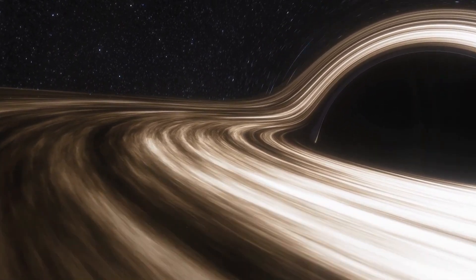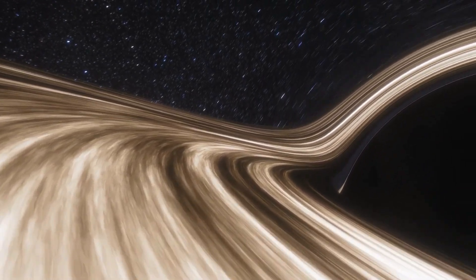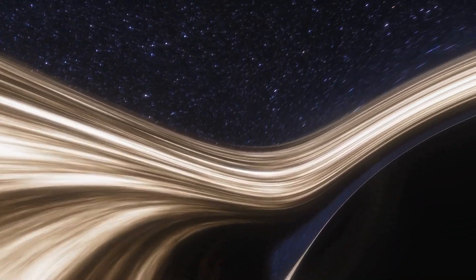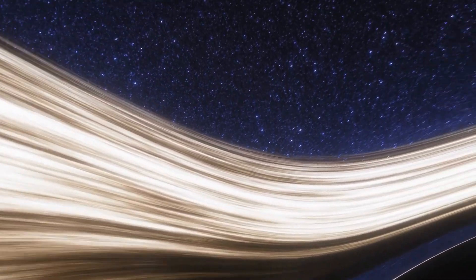If a planet or a star gets too close to a small black hole, it can get ripped apart and form an accretion disk around the black hole.